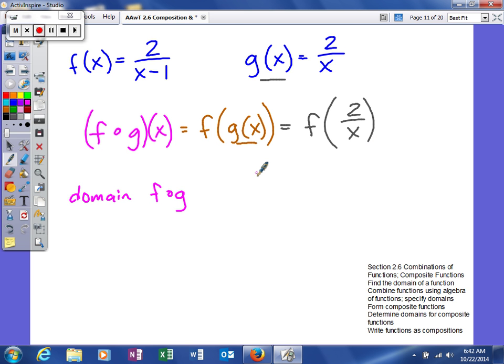When we do this, we're going to take out all of the x's and replace 2 over x into our problem. So 2 over x minus 1 in our denominator, divided into 2.